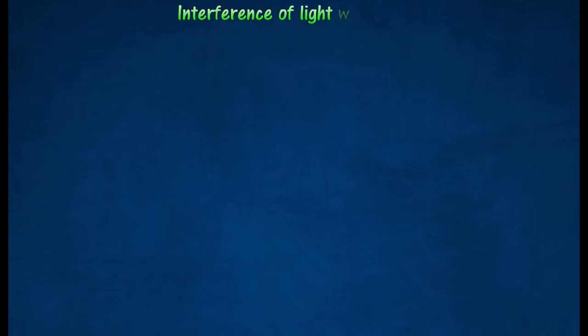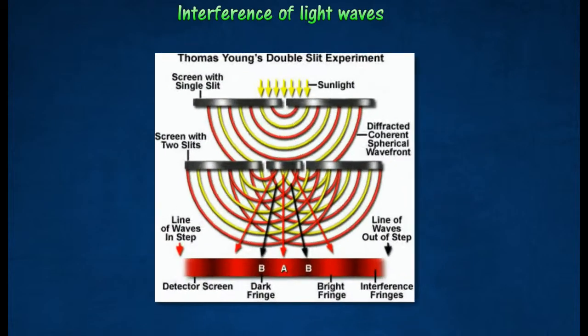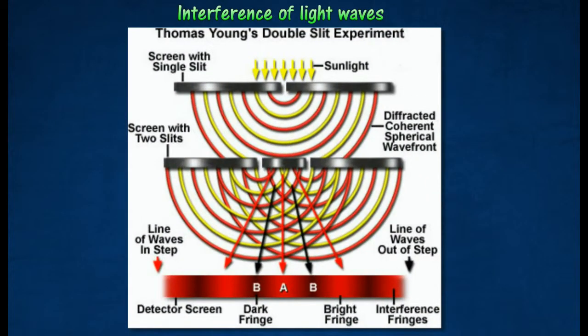Interference of light waves. Interference of light can be produced by passing light through a very narrow double slit. When light from a source is directed onto two narrow parallel slits, an interference pattern consisting of alternate bright and dark fringes can be seen on the distant screen.